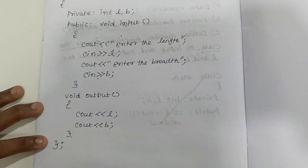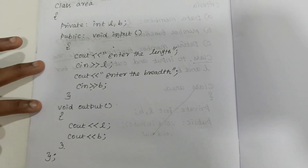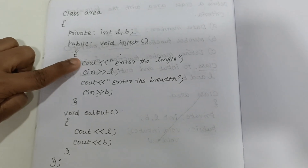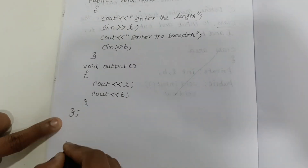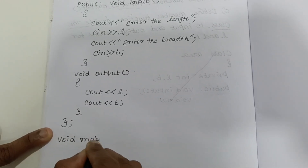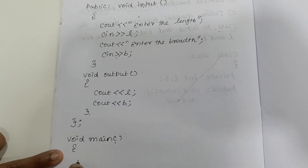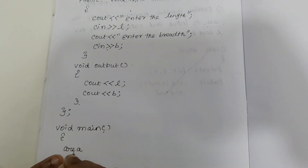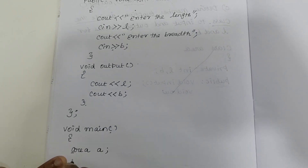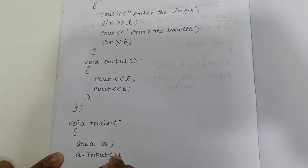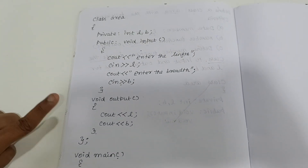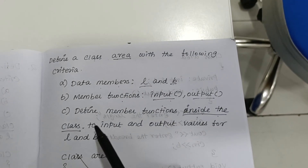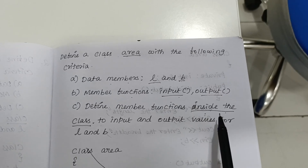Now close the class with a semicolon. Everyone should understand the difference between the two programs: in this example, both the input function and output function are defined inside the class, and the class is closed with a semicolon at the end. Now write the main function: void main. Create an object: area a; Call the functions using the dot operator: a.input(); a.output(); Close the bracket. Sometimes the question won't mention inside or outside — in that case you can choose either method.